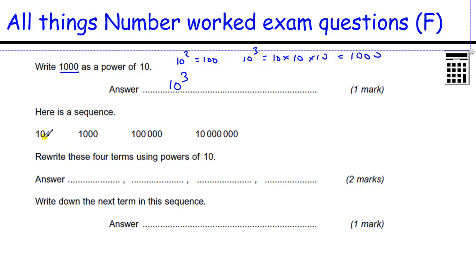We've got a sequence here. 10, then it goes 1,000. So we're adding two zeros that time, then another two zeros, then another two zeros. Rewrite these four terms using powers of 10. This is just 10 on its own, so it's 10 to the power of 1. And the number of zeros tells us what power of 10 it is. So three zeros is 10 to the 3, five zeros is 10 to the 5, and seven zeros is 10 to the 7.